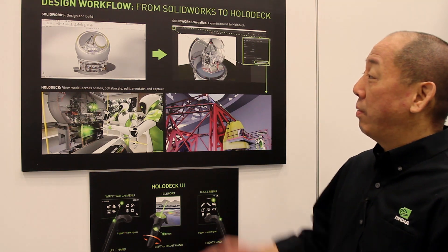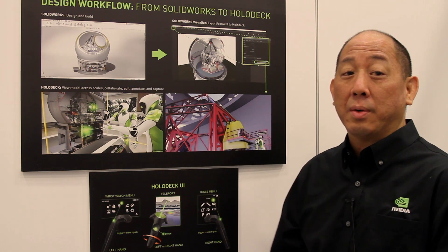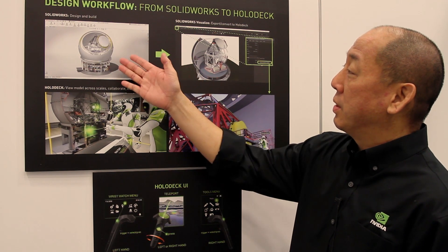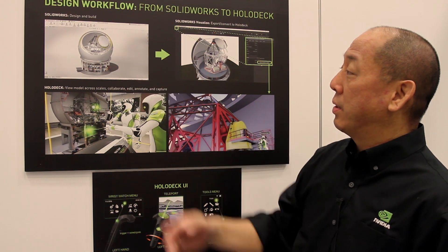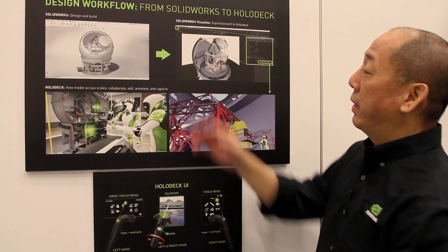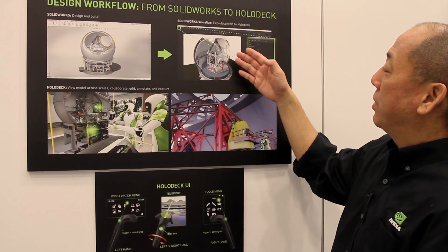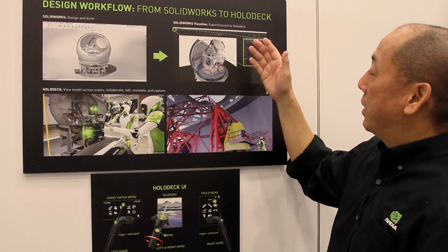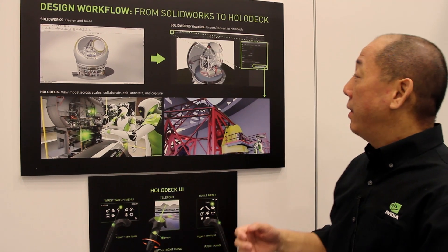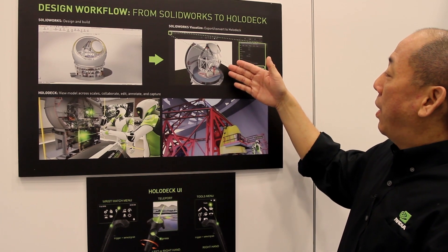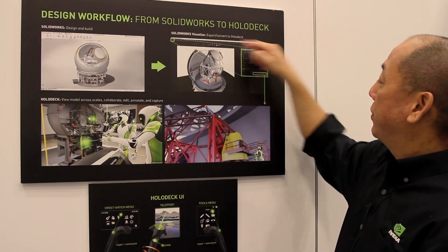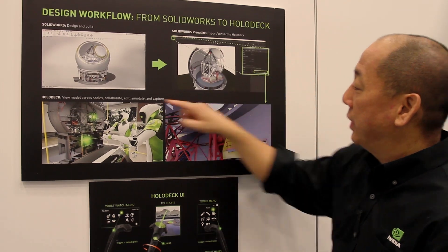The process here is we have a model of the CFH telescope. The model was built partially in SOLIDWORKS and other components, all assembled in SOLIDWORKS. From SOLIDWORKS the model was then brought into SOLIDWORKS Visualize. This application allows you to apply materials and do renderings, and from here Holodeck has a plug-in which is a direct export from SOLIDWORKS Visualize directly into Holodeck.